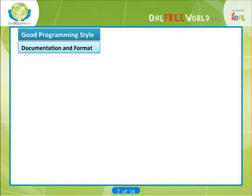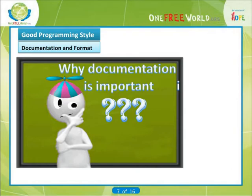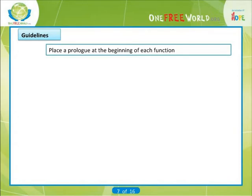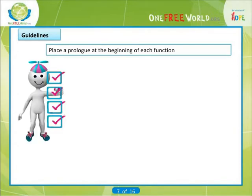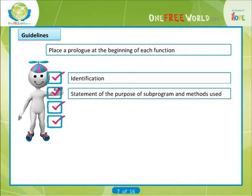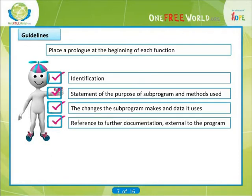Now we come to documentation and format. Documentation is important because it allows other people to understand your program, but do not over-document. Here are some guidelines: place a prologue at the beginning of each function, including identification, programmer's name, date, version number, statement of the purpose of the sub-program and methods used, the changes the sub-program makes and data it uses, and reference to further documentation external to the program.